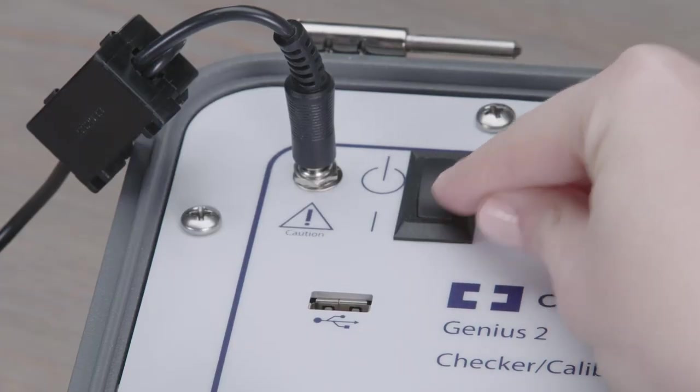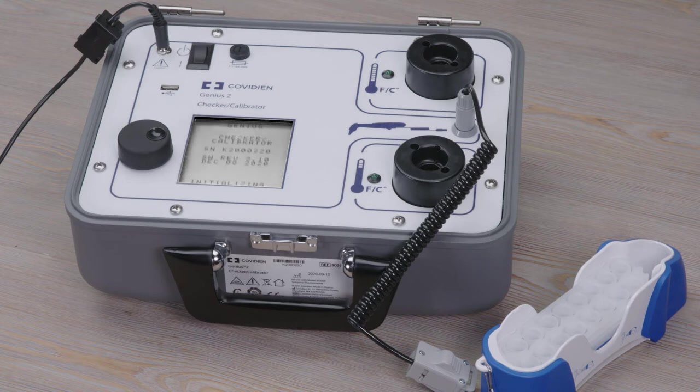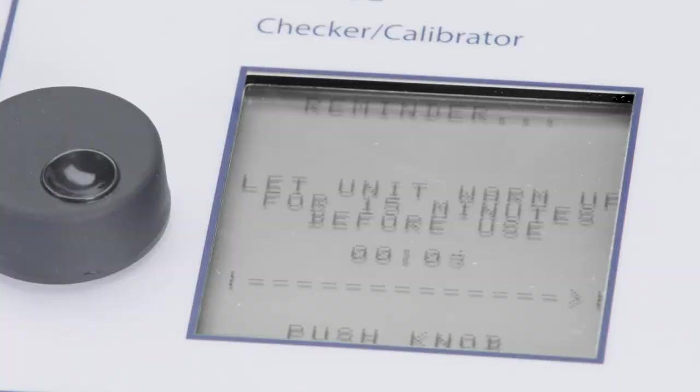Start by switching on the checker-calibrator device. The screen will recommend waiting 15 minutes before beginning the first calibration. This allows the checker-calibrator's targets to heat up to the required temperatures. When 15 minutes have passed, the device is ready to use.